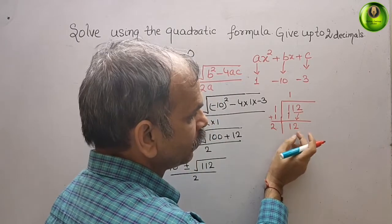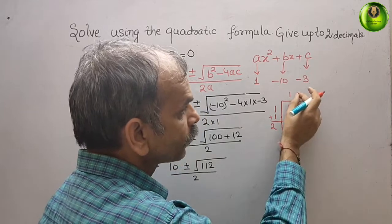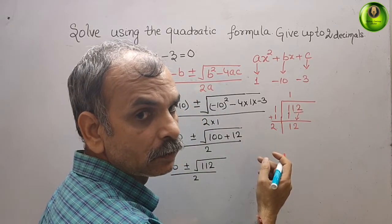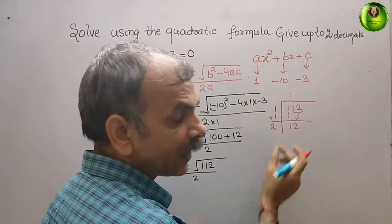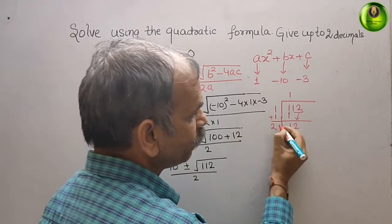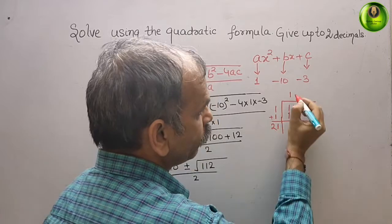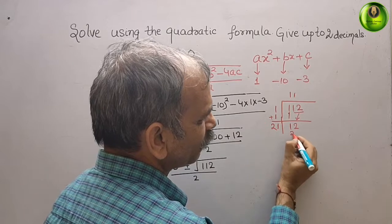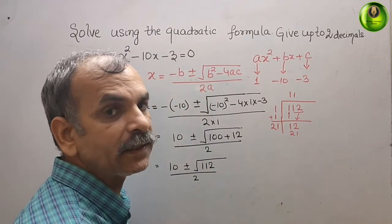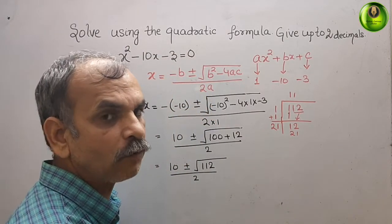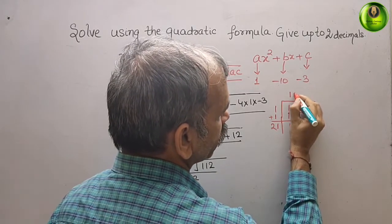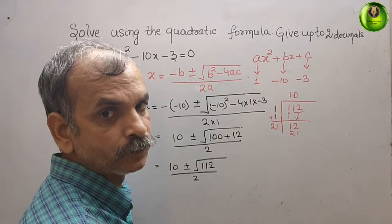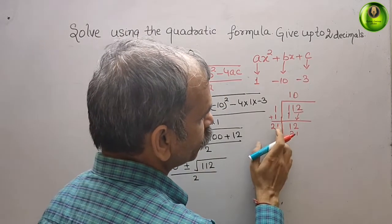It will become more than this value if you put 1 only. If you put 1 here, you multiply 1 into 21, which is 21, greater than that. So we will first put 0 here.